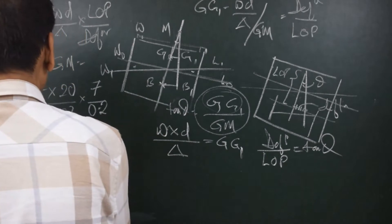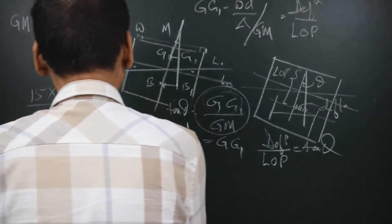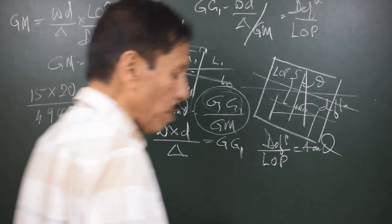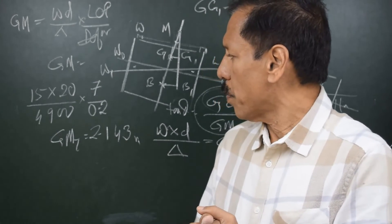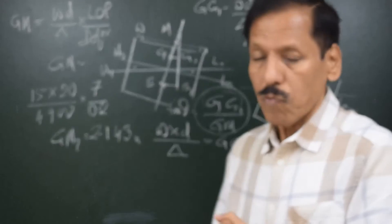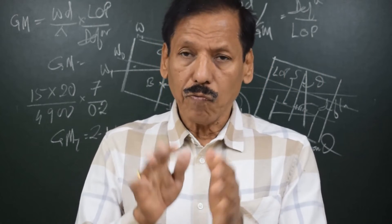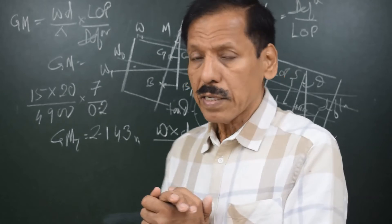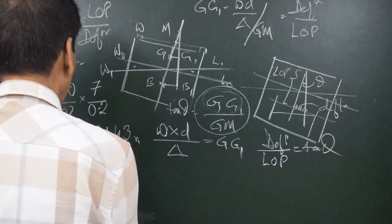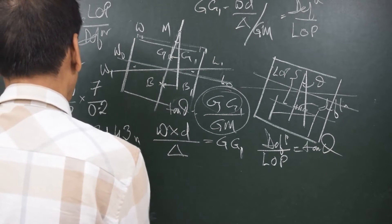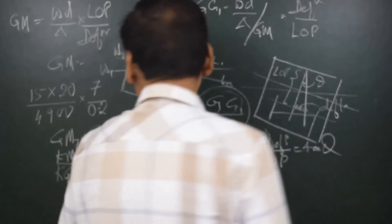This gives a GM of 2.143 meters — GM transverse at the time of experiment is 2.143 meters. This is a simple calculation showing the principle of the inclining experiment. The KM transverse is known to the ship from stability data. Suppose for the displacement of 4900 tons the KM transverse was 8 meters.